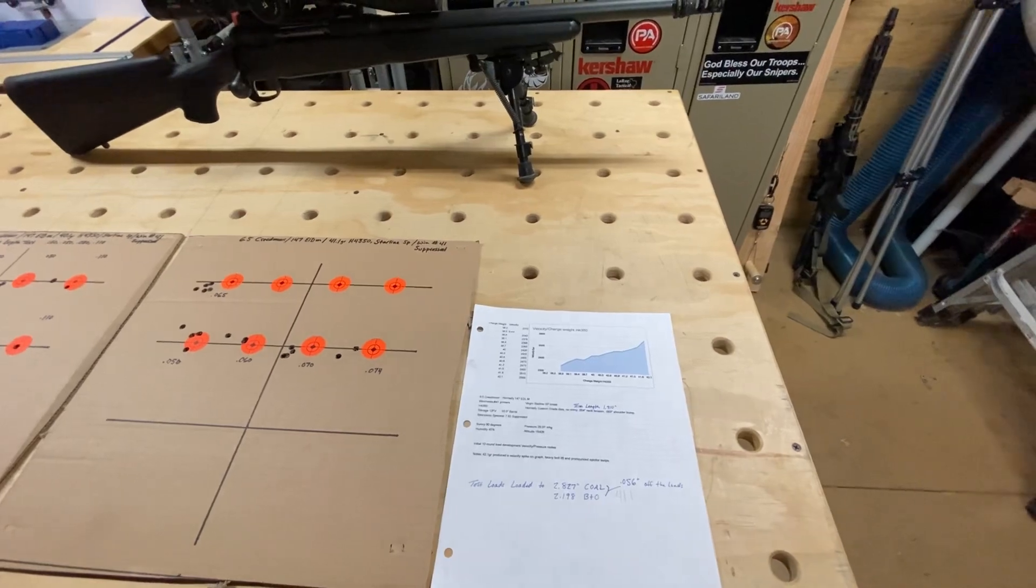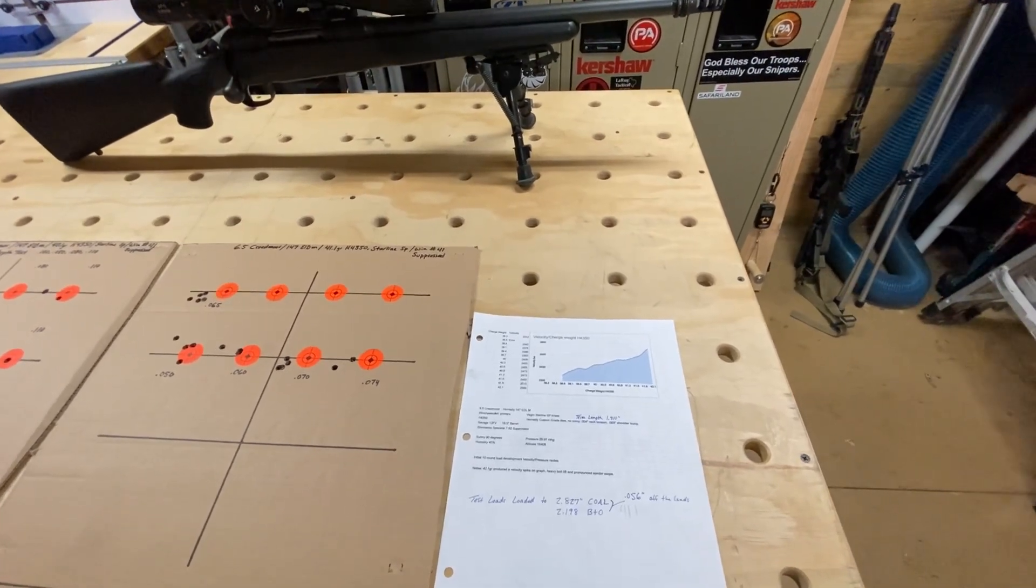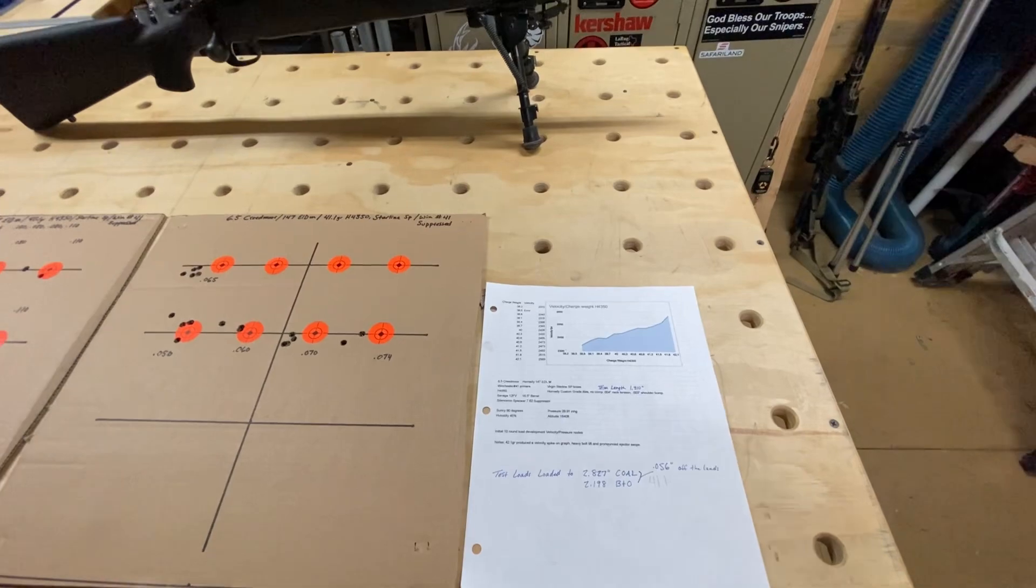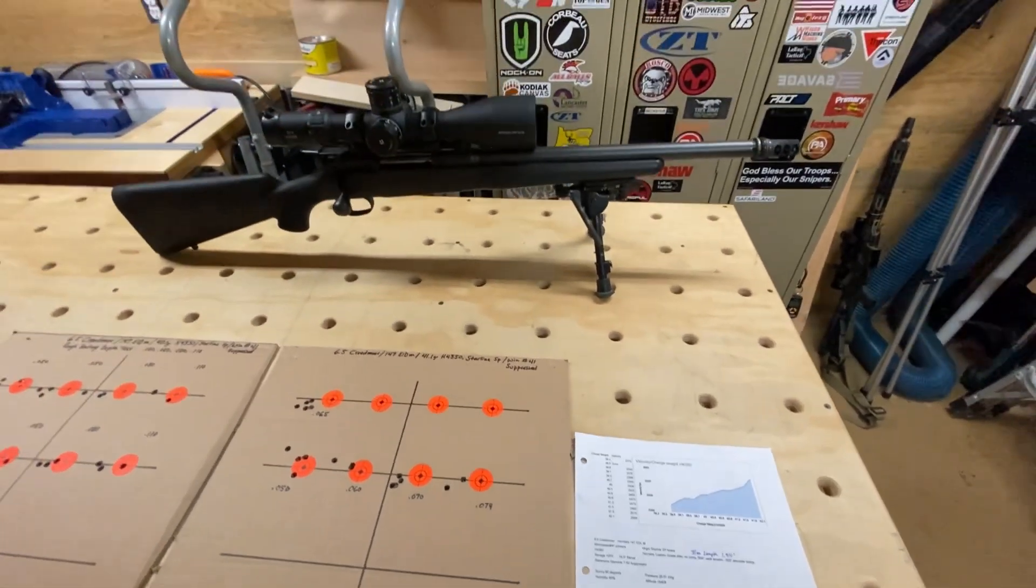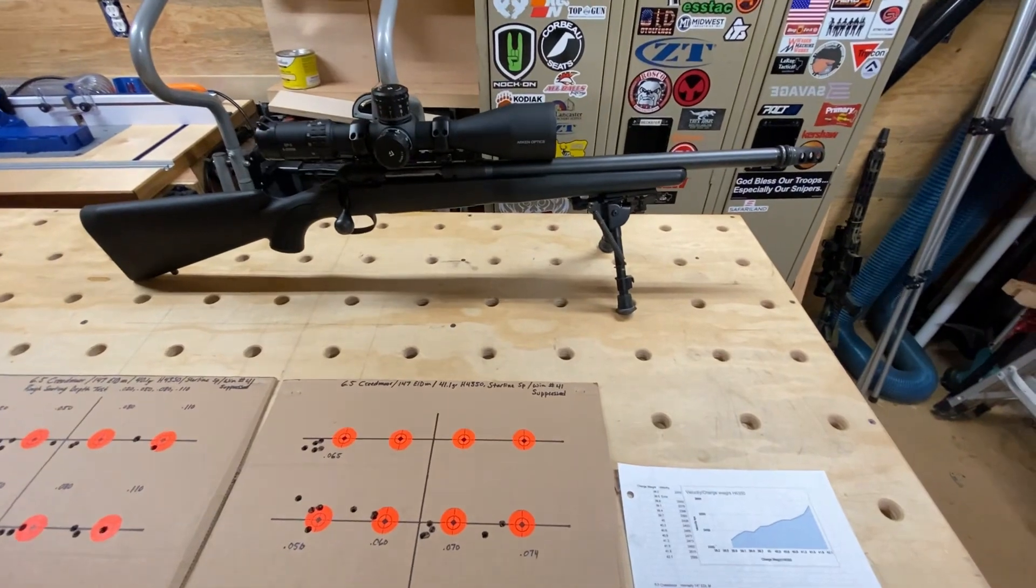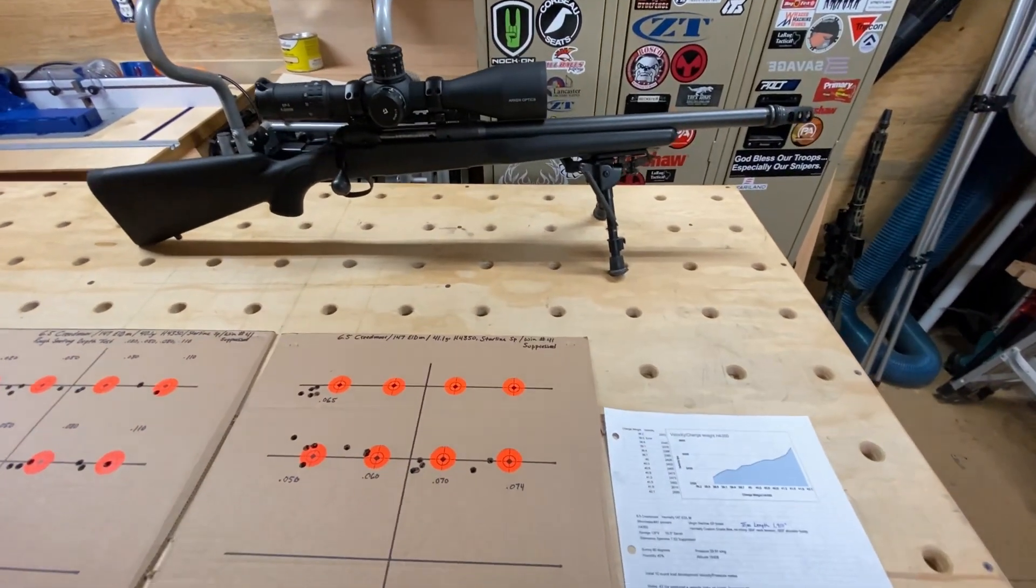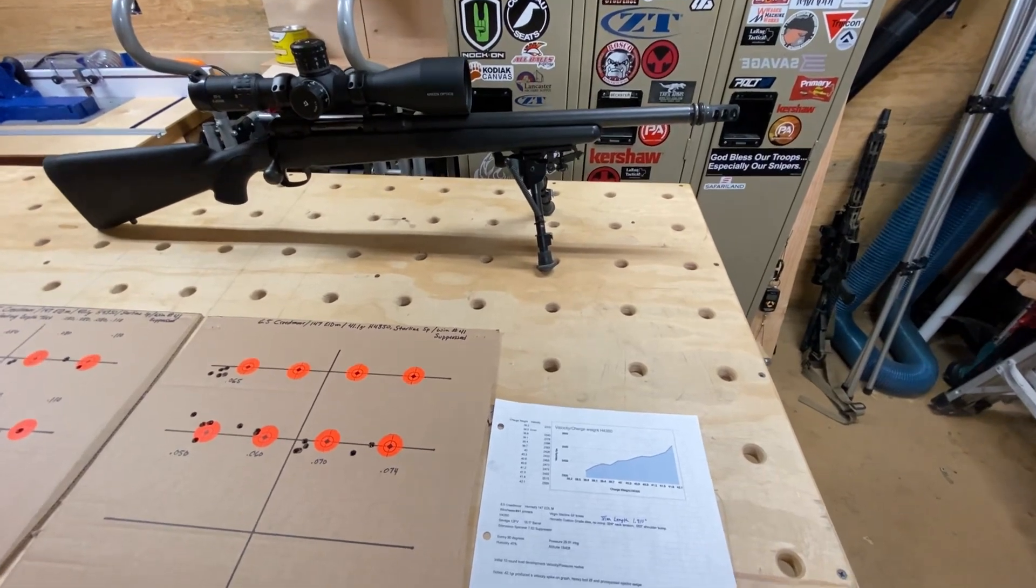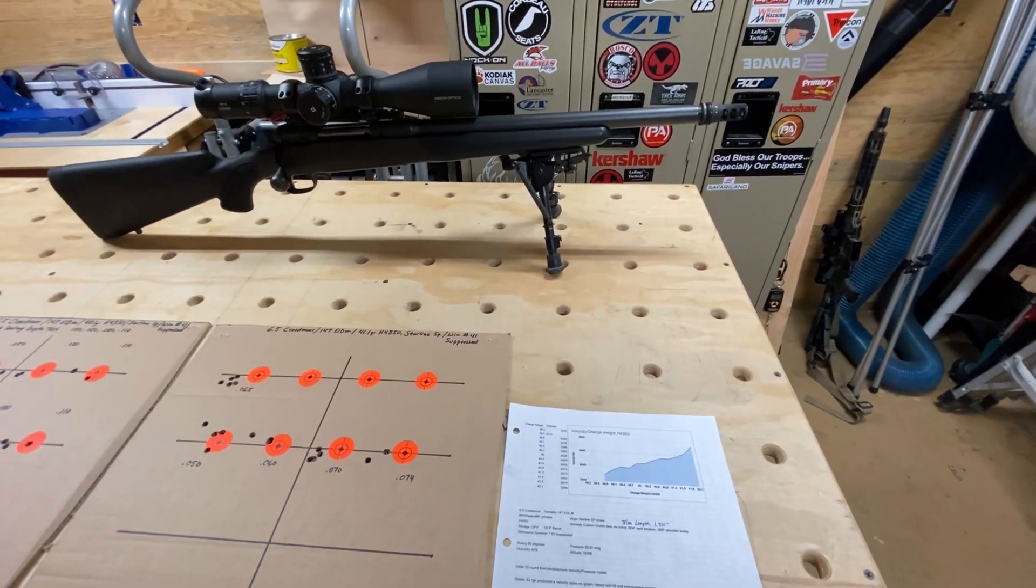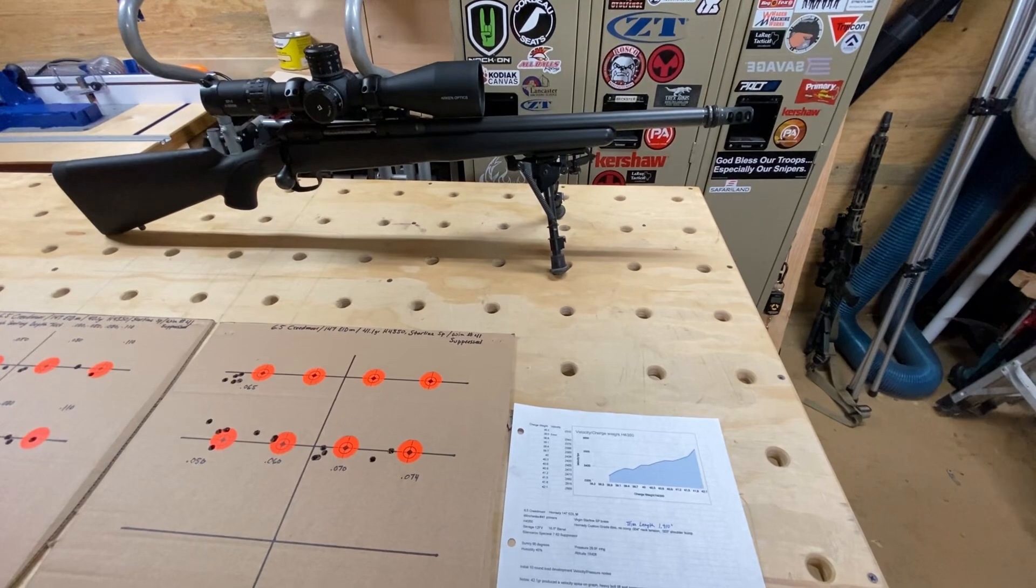I think the last load development video that I did was for a 45-70. I've been working on this 6.5 Creedmoor load for my hunting rifle. It's a Savage 12 FV in 6.5 Creedmoor that I had the barrel cut down to 16.5 inches so I can run it suppressed and carry it around and it's not too terribly heavy.